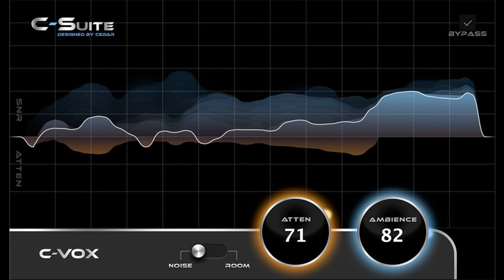Going beyond typical noise gates, C-Vox intelligently responds to and reduces room noise in real-time, without noise fingerprints or unnatural artifacts. This quick, adaptive processing delivers seamless low-latency results for vocal recording, cleaning up signals before mixdown. This results in clear, focused recordings that sound as if they were captured in a more professional space.